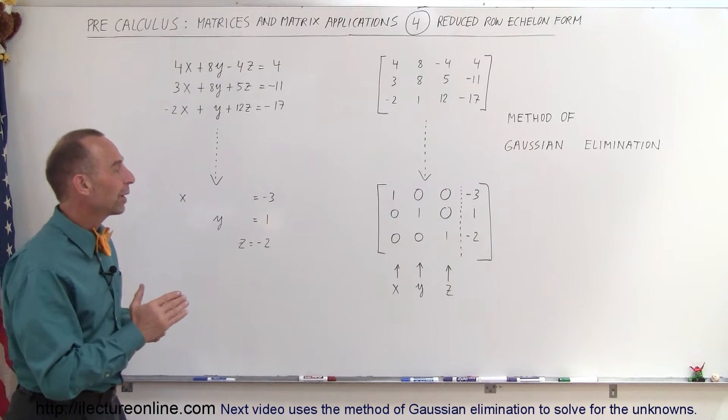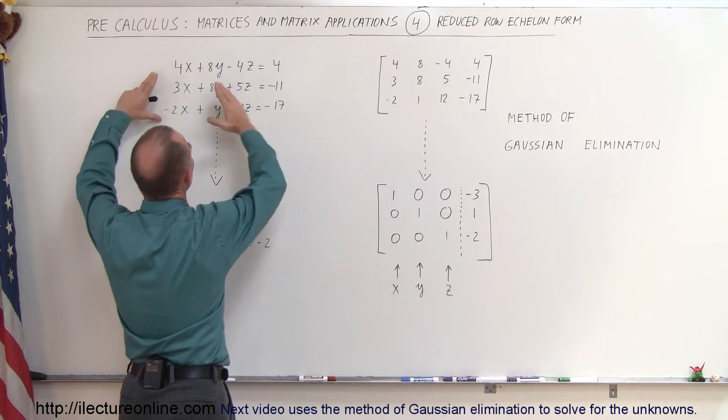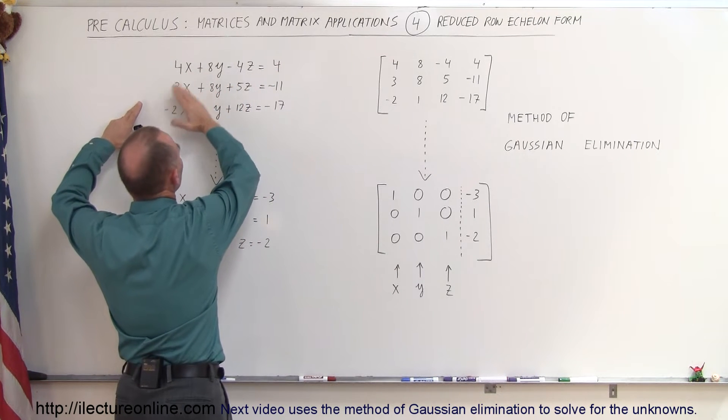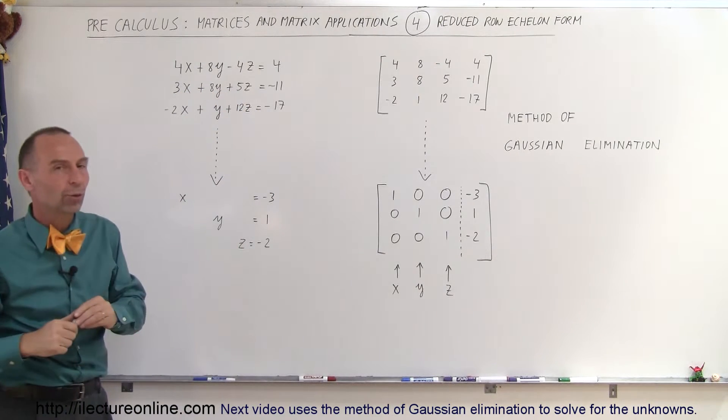Well in the previous video we recognized that if we could take a system of linear equations and write it like so where we had zeros on the bottom left corner we could easily solve for Z, Y, and X in that order.